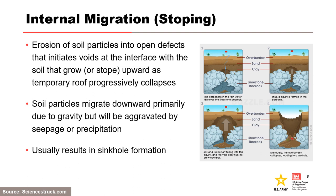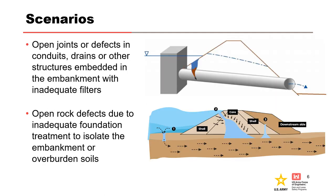Failure from internal migration can occur if the sinkhole is large enough to cause overtopping, if the core is breached by the sinkhole, or the downstream or landside slope of the embankment is over-steepened to the point of instability. Internal migration can also occur if there are open joints or defects in conduits, drains, or other structures that are not filtered, or if there are untreated rock defects in the foundation. Voids or sinkholes can form upstream, within the central portion of the dam, or on the downstream shell.